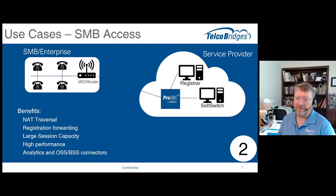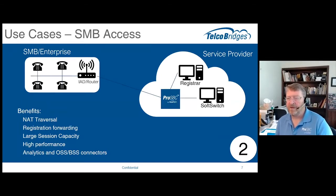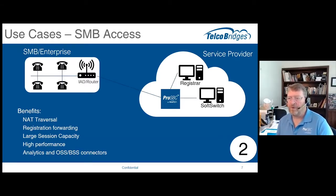They have challenges of NAT traversal — that small edge router that's going to use network address translation to provide IP addresses to the IP phones. The session border controller needs to pass through that NAT transition and keep the firewall ports open on that SMB enterprise.